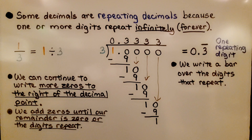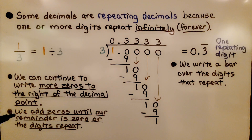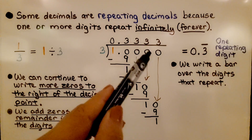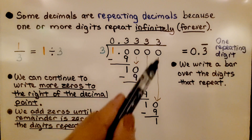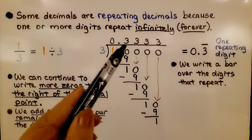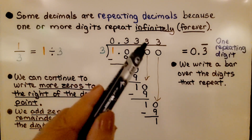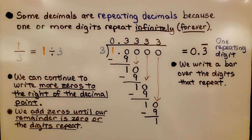We can continue to write more 0s to the right of the decimal point. We add 0s until our remainder is 0 or the digits repeat. We didn't need to do the fourth step — we could have seen that it was doing 3, 3, 3 and stopped there.